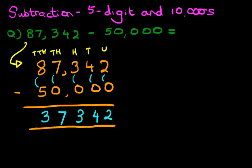And we have our answer. It is thirty-seven thousand, three hundred and forty-two. Nice and easy. That is how we do subtraction of a five digit number and ten thousands using the vertical format.